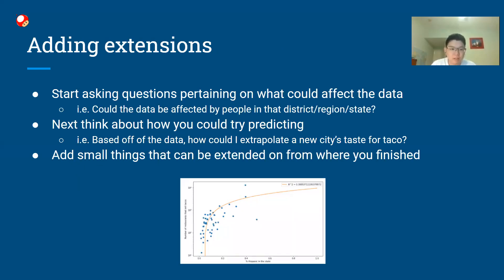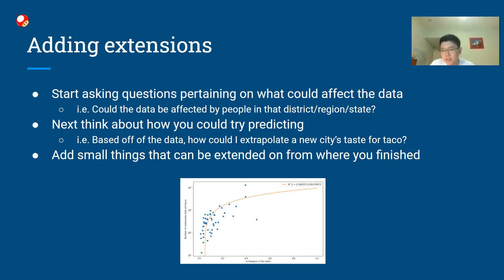Now we'll talk about how to extend your project and keep adding on to it. Start asking questions about what could affect the data — maybe add more data sets. Could the data be affected by people in the district, region, or state? For us, we used the U.S. Census to work with our current data set. You could also try predicting: based on the data, how could you extrapolate a new city's tastes for tacos? Keep adding small things extended from where you've finished. We added the U.S. Census and would have loved to add more if time permitted.